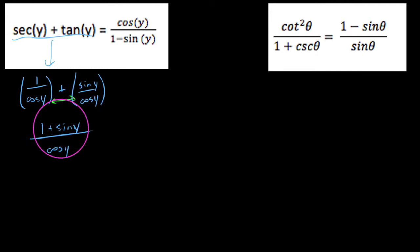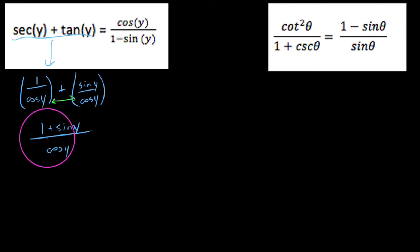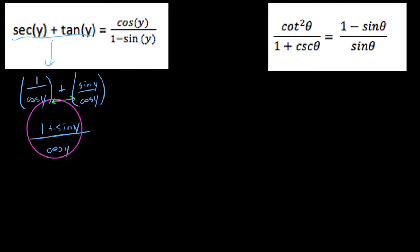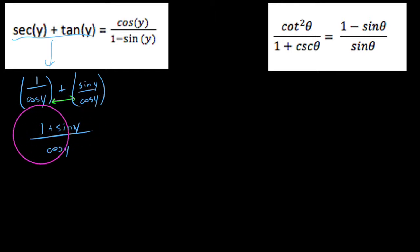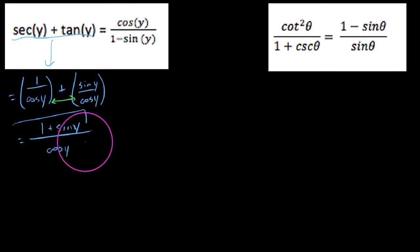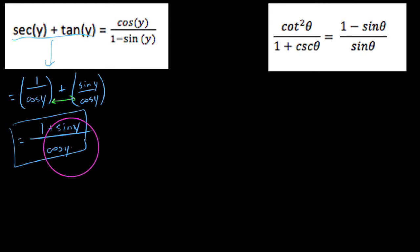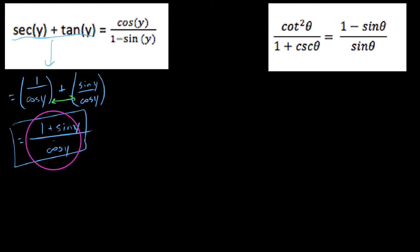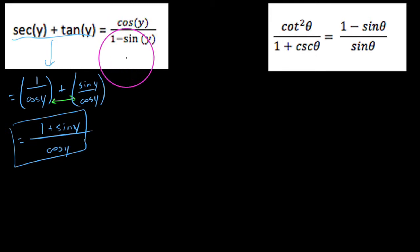At this point I don't notice anything squared, no factoring, no distribution. Everything is already in terms of sines and cosines, and we've got the left-hand side down to 1 plus sine y over cosine y. I'm going to put a box around this — we're not done with it, but for right now I'm going to leave it as is and take a look at the right-hand side.